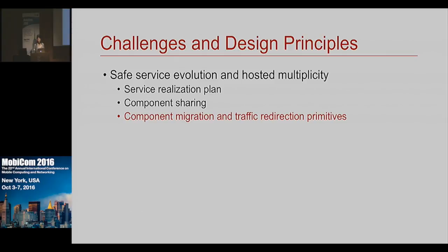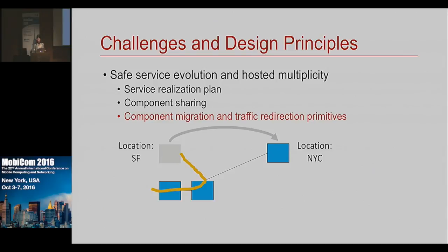Proteus also allows primitives for dynamic component migration from one location to another in the SDI, and then traffic redirection using them. For example, components in one location with traffic going through them can be migrated to a new location, such as New York City, and traffic redirected to the new location while the original one is shut down.